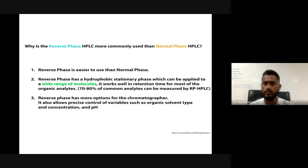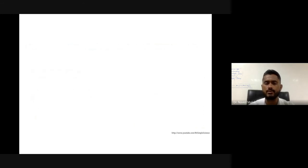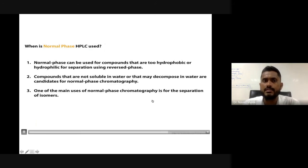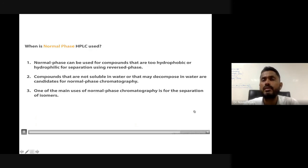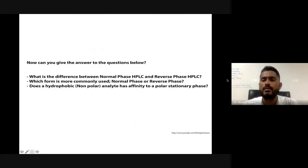Reverse phase HPLC is the most commonly used because it is easier to use than normal phase, the hydrophobic stationary phase can be applied to a wide range of molecules, it works well in terms of retention time for most organic analytes, and it allows more options and precise control for the chromatographer. Normal phase HPLC is generally used when compounds are very hydrophobic or for the separation of isomers.